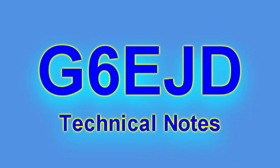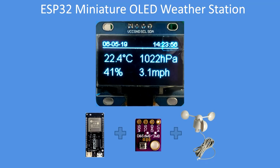Hello, I'm Dave, welcome to my technical notes channel. This project uses an ESP32 — or optionally an ESP8266 — with a BME280, a wind speed sensor, and an OLED display to provide a miniature weather station.